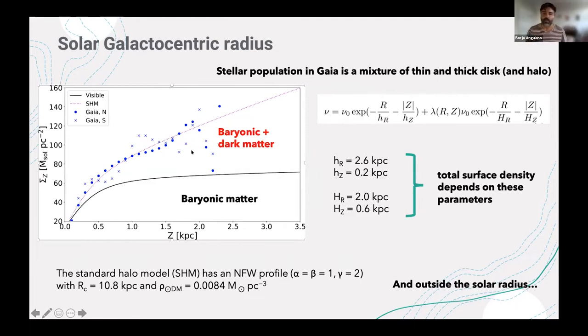Matching this standard halo model using a Navarro-Frenk-White profile for the quantities that I express here. What happens when you play with Gaia is that you have a mixing population. You are using the Jeans equation in a mixing population. You have thin disk, you have thick disk, and we're going to have halo.